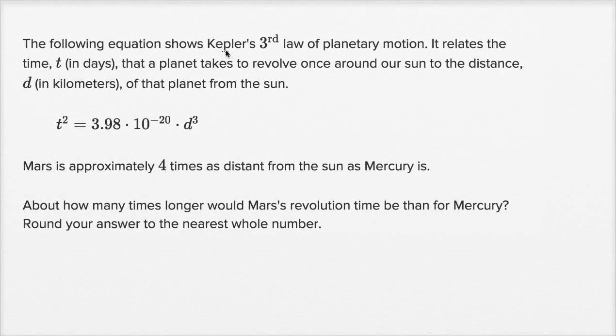The following equation shows Kepler's third law of planetary motion. It relates the time t in days that a planet takes to revolve once around our sun to the distance d in kilometers of that planet from the sun.